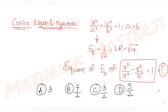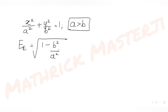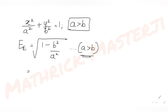Given the ellipse equation x²/a² + y²/b² = 1 with a > b, the eccentricity of the ellipse is given by √(1 - b²/a²) when a > b. The question tells us the eccentricity is 1/√2, so we set √(1 - b²/a²) = 1/√2.